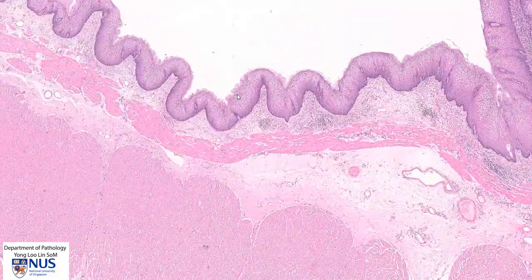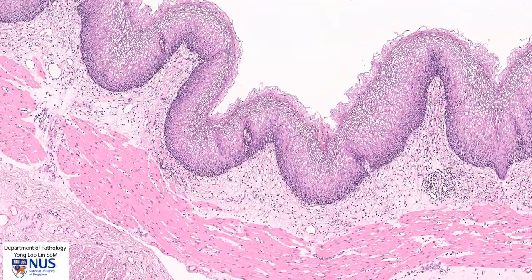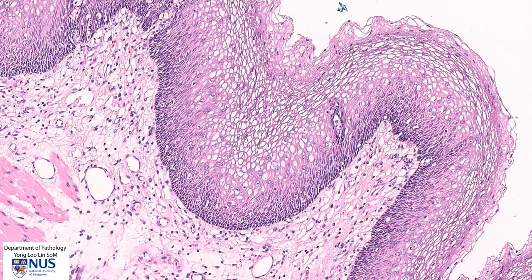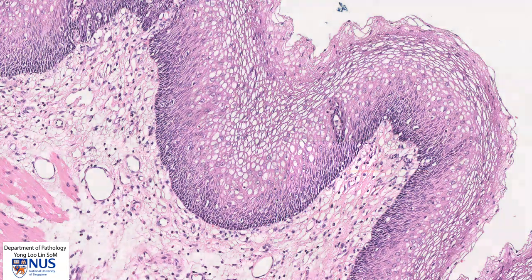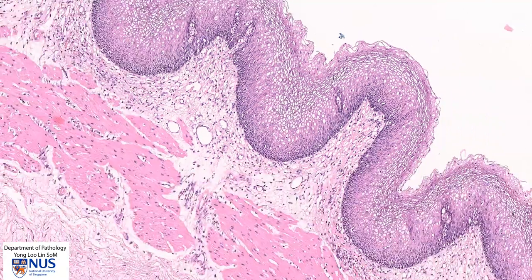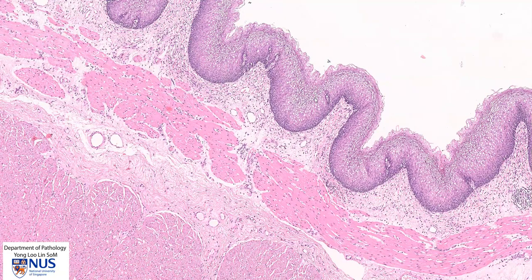On closer up view, we can see the stratified squamous epithelium and there is preservation of nuclear polarity, with the basal cells having more vertically oriented nuclei. As we go towards the lumen or towards the surface, the nuclei are more horizontally oriented or more flattened, and this is normal maturation within the esophageal mucosa.